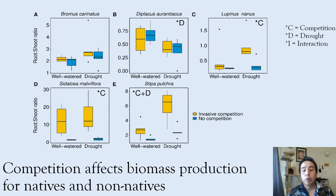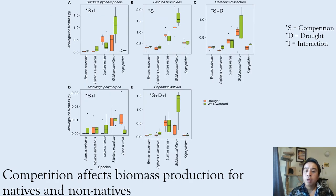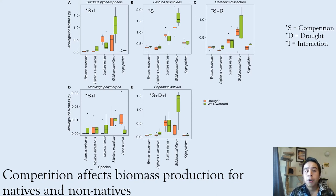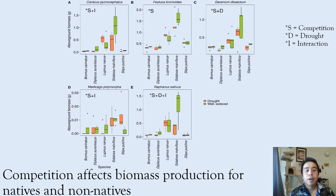For Lupinus nanus, a leguminous forb, and Sidalcea malviflora, a non-leguminous forb, competition tended to increase root growth. For non-native species, we found that Geranium dissectum and Raphanus sativus were often negatively affected by drought, showing lower above-ground biomass in response to drought. The other species — Carduus pycnocephalus, Festuca bromoides, and Medicago polymorpha — did not show a significant effect of drought, but almost all species measured had a significant effect of which native species they were growing with. This indicates that certain native species may be better at competing against some non-native species, and that some non-native species may be more sensitive, especially to drought.